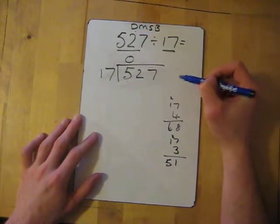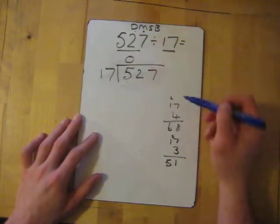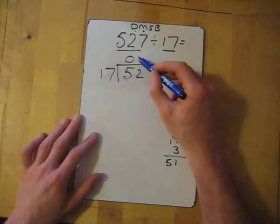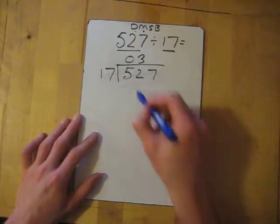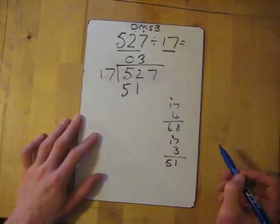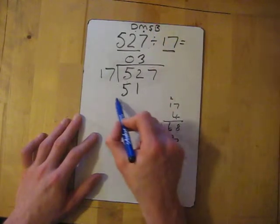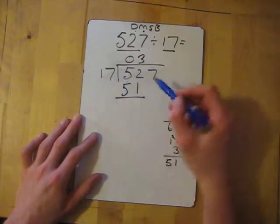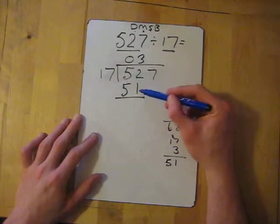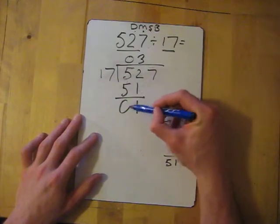We've divided, we've multiplied. Now with the multiplication, put the 3 - 3 times 17 gives me 51. Now we need to subtract, so take away 51. 52 take away 51, so 2 take away 1 gives me 1, 5 take away 5 gives me 0.